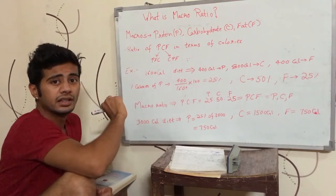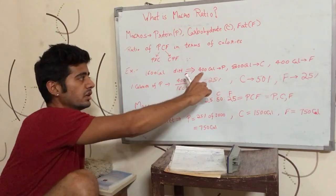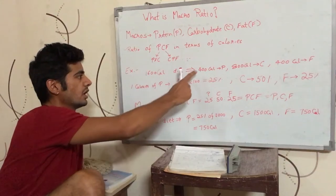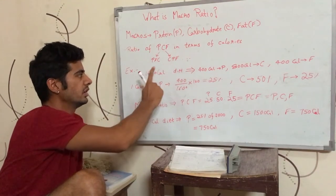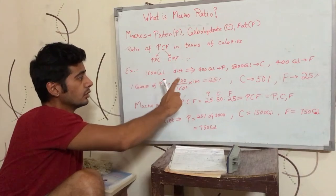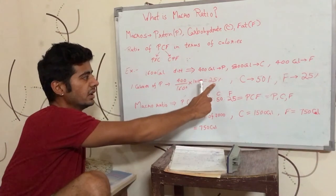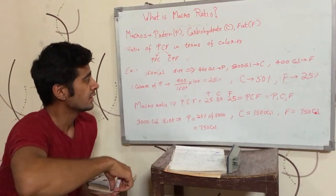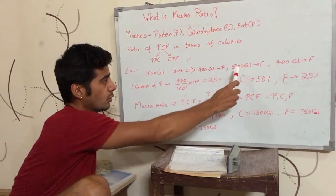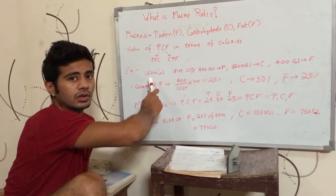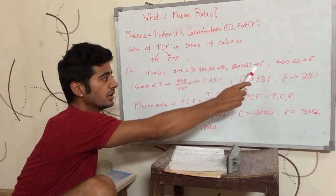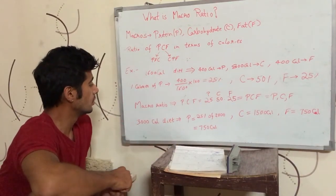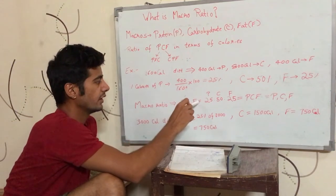So the total calories from protein is 400 calories out of 1600 total calories. The percentage of protein is 25% of protein. If you take 800 calories from carbohydrates, the percentage of carbohydrates is 50%. And the percentage of fat is 25%. This is the macro ratio of protein, carb, and fat.